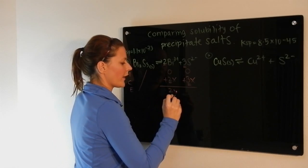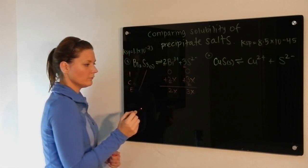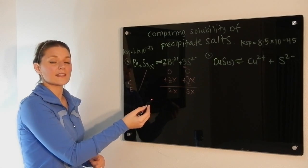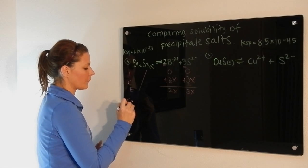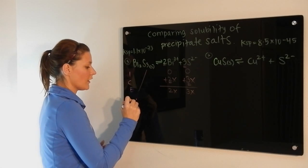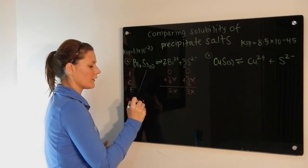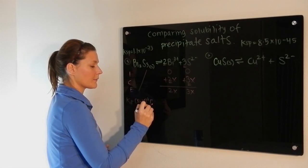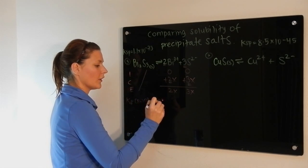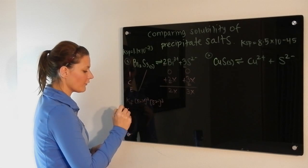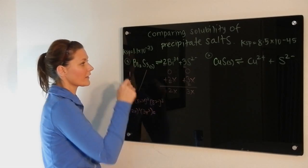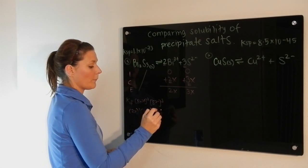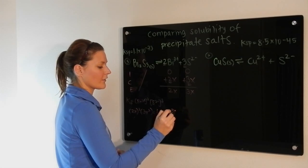So at equilibrium we have 2X and 3X. To solve for X, we just need to set this equal to the equilibrium constant. The expression for the equilibrium constant Ksp is the concentration of bismuth squared times the concentration of sulfide cubed. If we plug in our values, we have 2X squared times 3X cubed is equal to the Ksp value given, 1.1 times 10 to the minus 73.